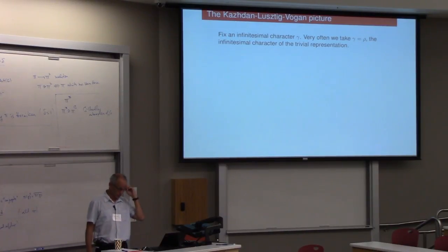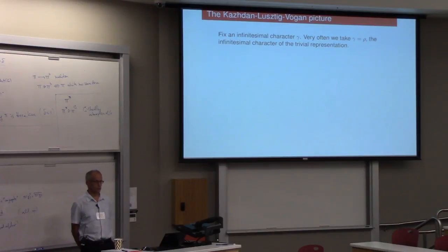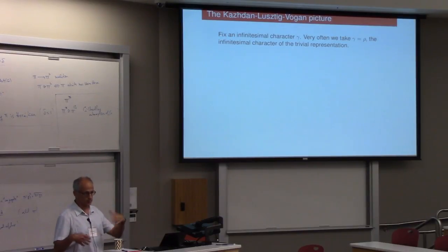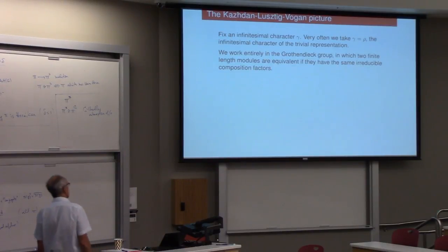I want to go on and talk about the Kazhdan-Lusztig-Vogan picture. So, fix an infinitesimal character gamma. And a lot of the time you can just take rho to be the infinitesimal character of the trivial representation. In a lot of ways that's the most interesting one where there's the most complex structure, the most complicated kinds of representations.